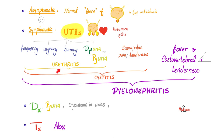The symptoms depend on the severity and which part of the urinary tract the infection is at. If the infection is just in the urethra, I would probably have frequency, urgency, burning, dysuria, and in some cases even pyuria — pus in the urine. If it goes up and reaches the bladder, i.e., cystitis, we'll have the same symptoms plus suprapubic pain and tenderness, still no fever and no costovertebral angle tenderness. But once the infection reaches the renal pelvis, i.e., pyelonephritis, I will start suffering from all of these symptoms plus fever plus costovertebral angle tenderness.